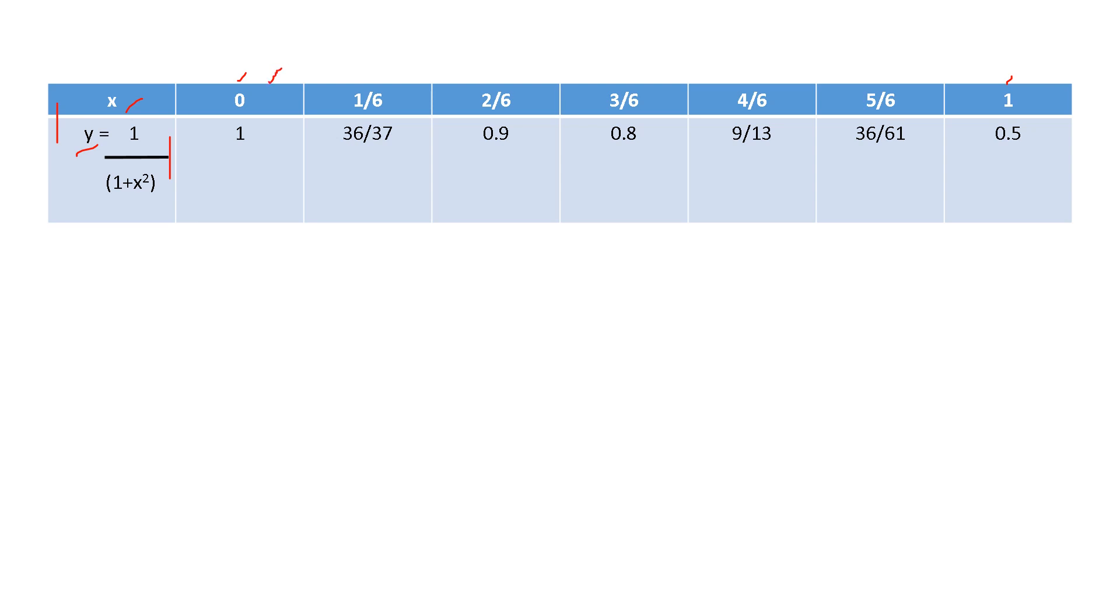So, 0 plus 1 by 6. We will get 1 by 6. So, we got the second value, 1 by 6 plus 1 by 6. We got the third value, 2 by 6 plus 1 by 6. We got the fourth value, 3 by 6 plus 1 by 6. We got the next, 4 by 6. And 4 by 6 plus 1 by 6. 5 by 6 and then 5 by 6 plus 1 by 6. That is 6 by 6 and that is 1. See, this way you have to find the values of x.